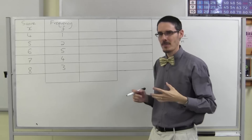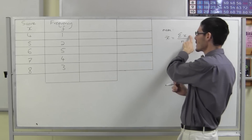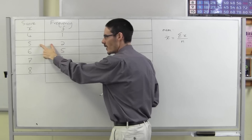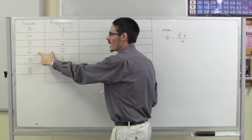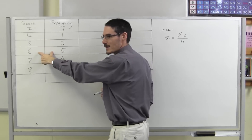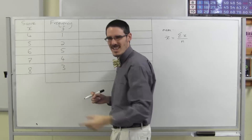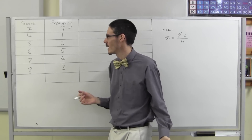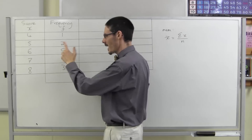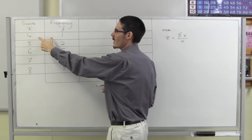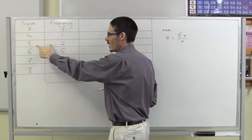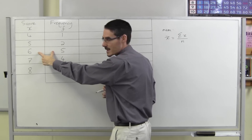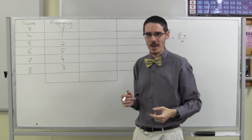So to get the mean, to add up the scores, I'd actually have to go 4 plus 5 plus 5 plus 6 plus 6 plus 6 plus 6 plus 6 plus 7, and so on. Is there an easier way? Of course there is. What I actually need to do is multiply the frequency by the score. Then I'll get one four, two fives which is 10, five sixes which is 30, and I can add those up and get there quicker.